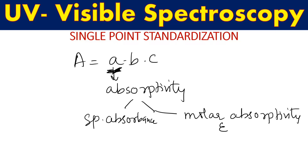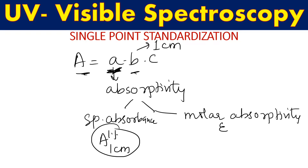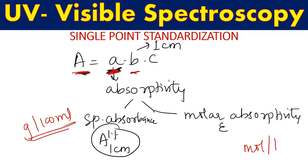When we substitute molar absorptivity epsilon, 'b' is usually one centimeter, so whatever concentration we get is in moles per liter. Specific absorbance is the A(1%, 1cm) value, and when we substitute that along with absorbance, with b equal to one, the concentration unit will be grams per 100 ml.